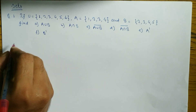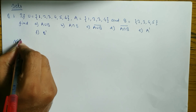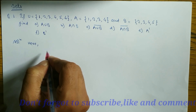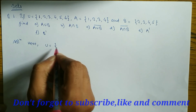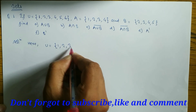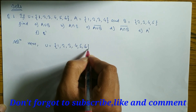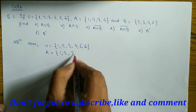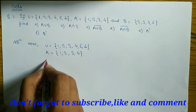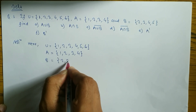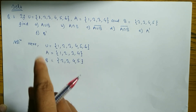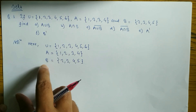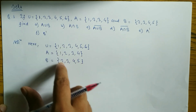Let's take a start. Solution. So you can learn step by step here how to find out A intersection B, A union B, as well as complement. The value of U is equal to {1, 2, 3, 4, 5, 6}, the value of A is equal to {1, 2, 3, 4}, and the value of B is equal to {2, 3, 4, 5}. These are the elements.